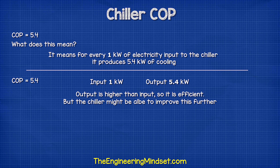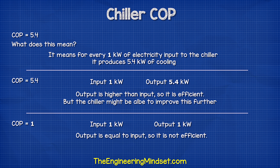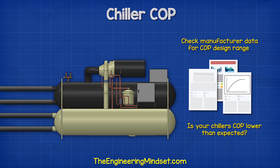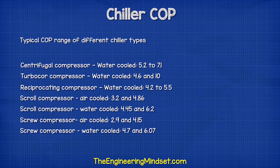We are therefore producing more cooling energy than electricity input, so it is efficient. However, this might not be operating at optimal performance and we could improve this. If we had a COP of 1, that would not be good because it means we would only get 1 kilowatt of cooling per 1 kilowatt of electricity. You can check with your chiller manufacturer what the design COP range is for your model to understand if it is operating efficiently. Typically, chillers will fall within certain ranges depending on the type of compressor used.